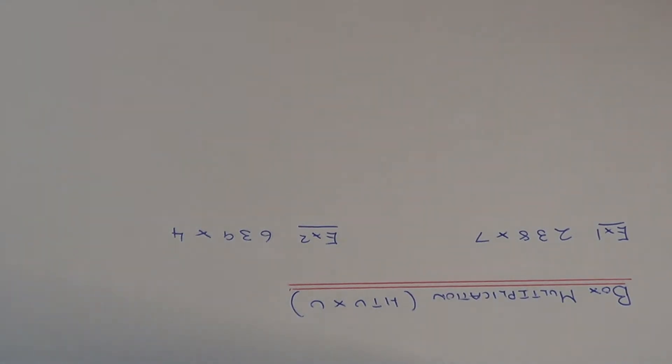I'm going to show you a couple of examples on how to use box multiplication to multiply a three digit number by a single digit number.